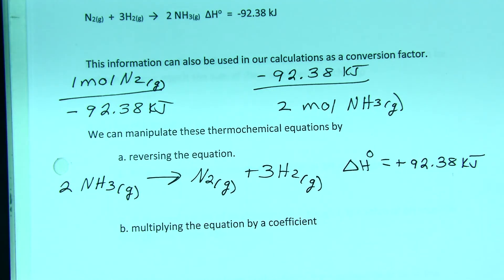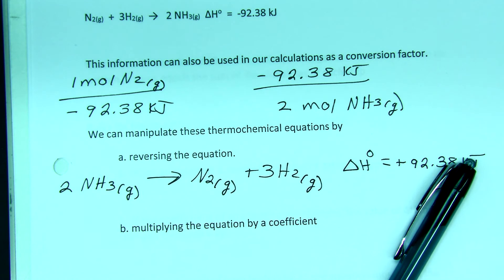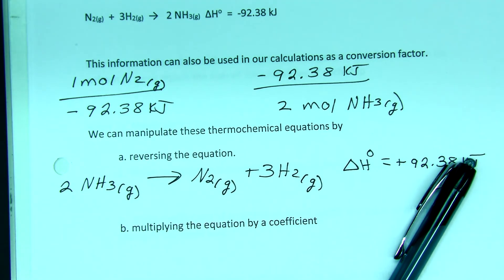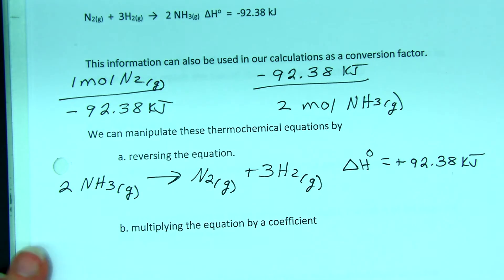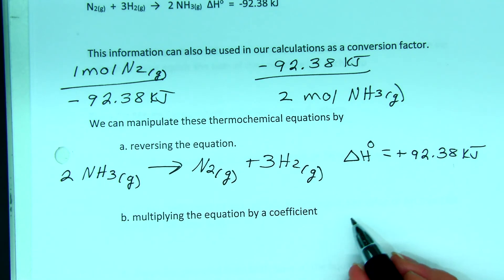Like if I wrote 3H2 first and then N2, it doesn't matter at all. So we think about this - if I walk from one end of the bench to the other, it takes a certain amount of energy. And if I go backwards at the same rate, I use the energy going in the opposite direction. So all we do is change the sign when we turn things around.